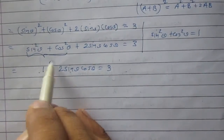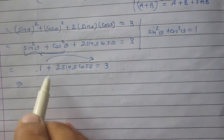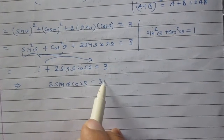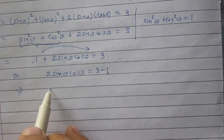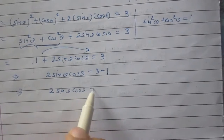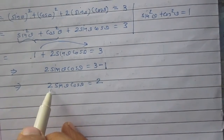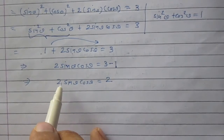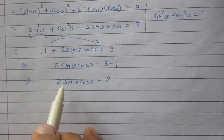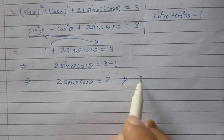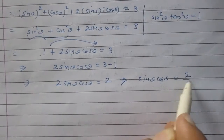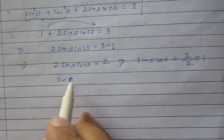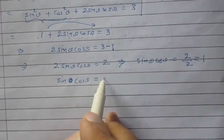We can transpose 1 to the right hand side. After doing so, we will get 2 sin theta cos theta is equal to 3 minus 1, which is 2. We can transpose 2 to the other side — since 2 is in multiplication with the product of sin theta and cos theta, on transposing it the multiplication turns into division. So we get sin theta cos theta is equal to 2 divided by 2, which is 1.